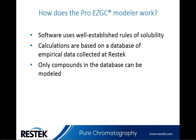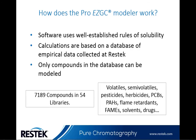One thing to note is that only compounds that appear in the database can be modeled. That being said, we do have 7,189 compounds modeled currently in 54 libraries. The libraries include volatiles, semi-volatiles, pesticides, all the way through to solvents and drugs. And we're adding new compounds and libraries regularly to keep ProEasy GC up to date and to expand the database.